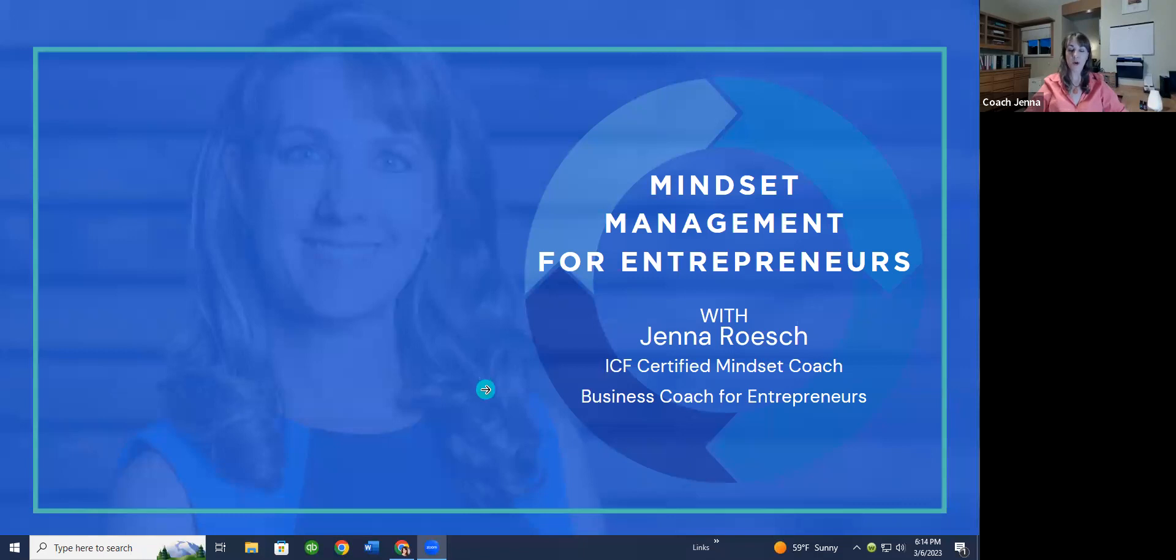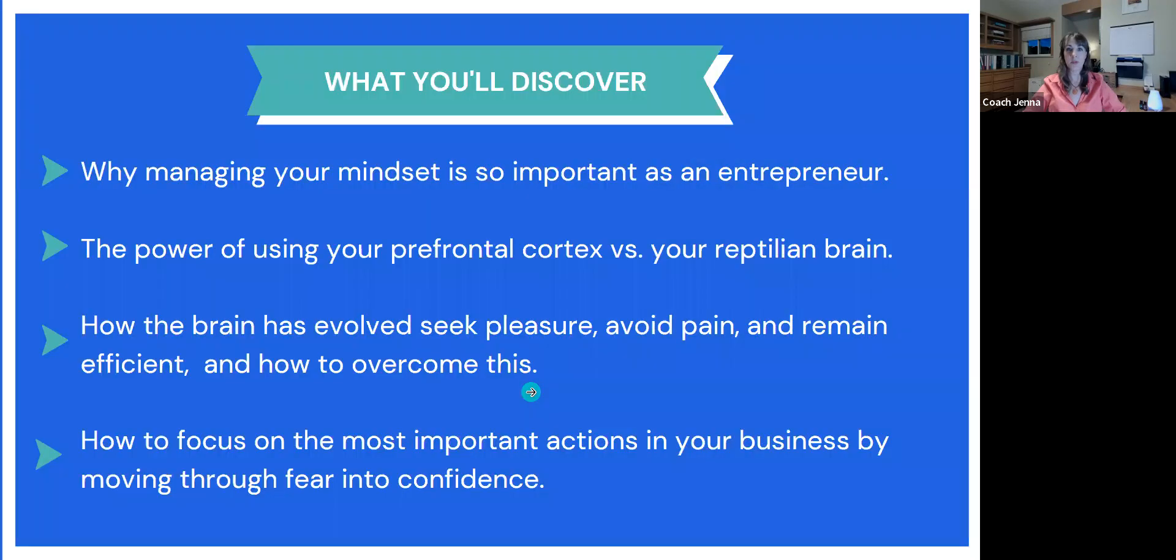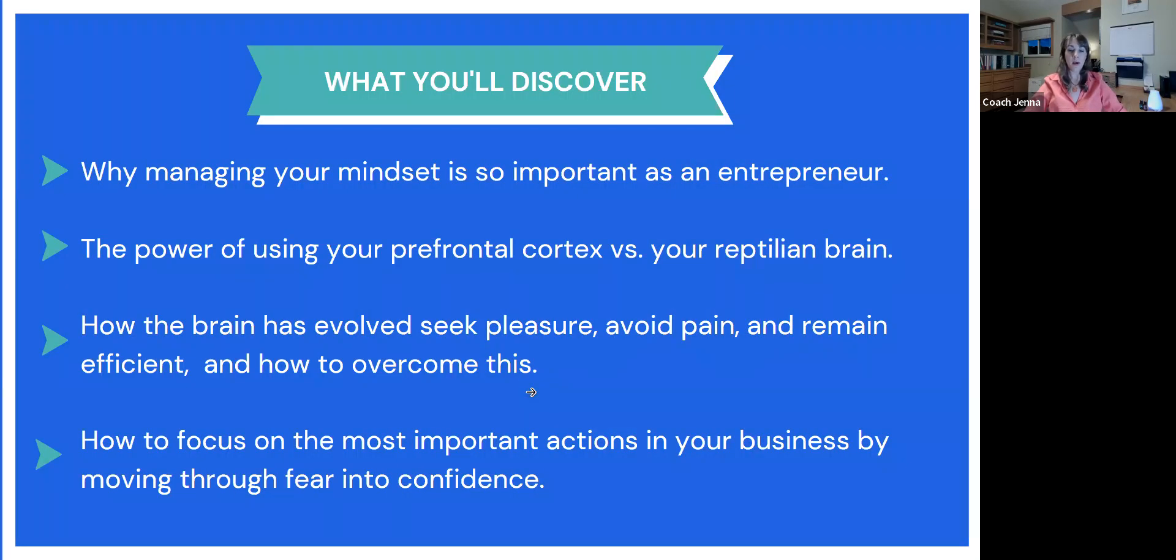Here we go. Okay, perfect. So what we're going to cover tonight is we're going to talk about why your mindset is the most important thing you can have as an entrepreneur. We're going to talk about the power of your prefrontal cortex, that part of your brain versus your primitive or reptilian brain. We're going to talk about how the brain has evolved to seek pleasure, avoid pain, and remain efficient. And we're also going to talk about how you can focus on the most important actions to make sure that your business is moving through fear and into confidence.